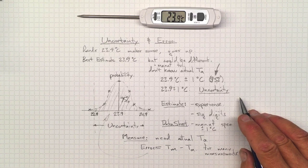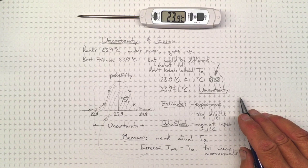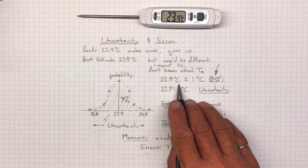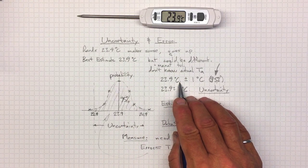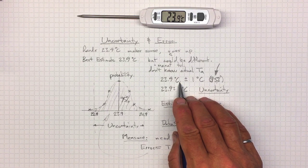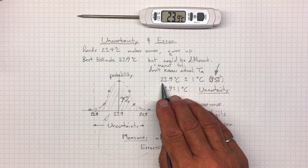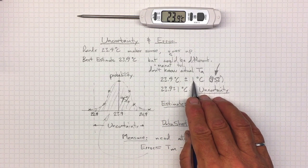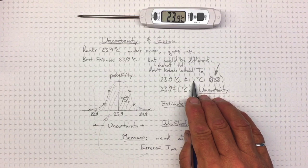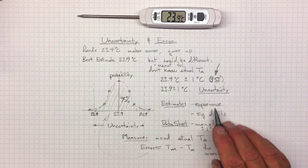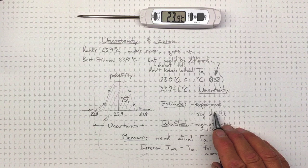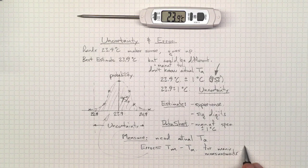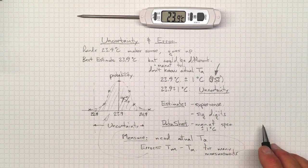Every measurement you make in this course, every measurement you make in an engineering context, should have an uncertainty attached to it. Saying 23.9 degrees Celsius doesn't tell me anything or doesn't tell me enough anyway. You need to say 23.9 degrees Celsius plus or minus one degree or half a degree or 0.1 degree to tell me how accurate those measurements are. We'll look more in detail at how to measure this in some subsequent videos.